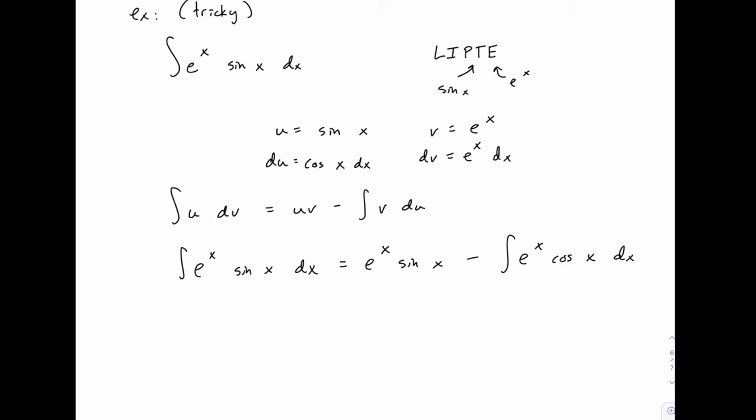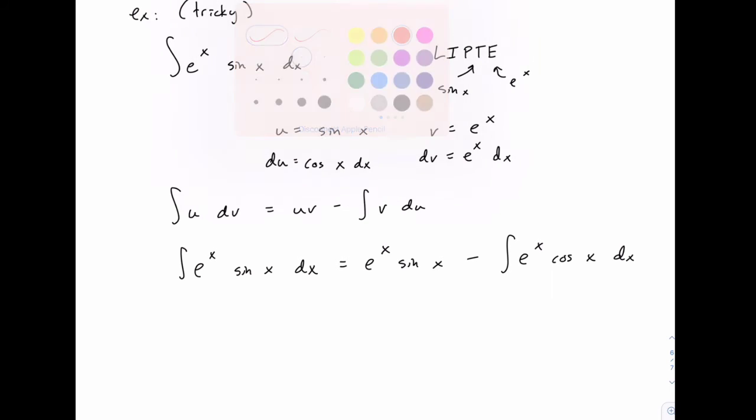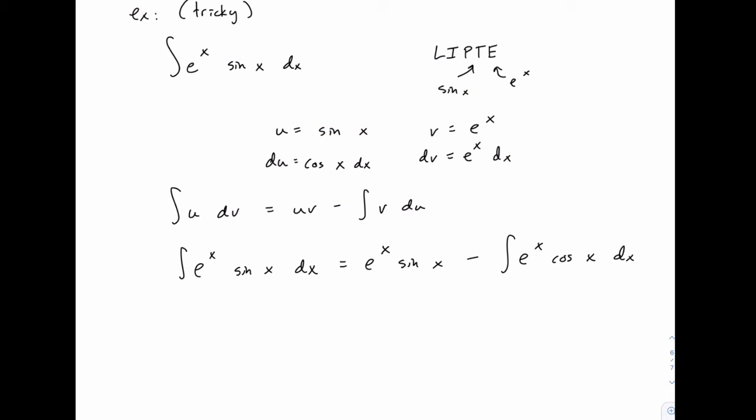Let's try using integration by parts again in hopes that maybe this time things will simplify. So again we have e to the x times the trig function, so we'll let u equal the trig function. We'll let dv equal the exponential function, and then we'll calculate du and v like we've always done, du by differentiating u and v by integrating dv.